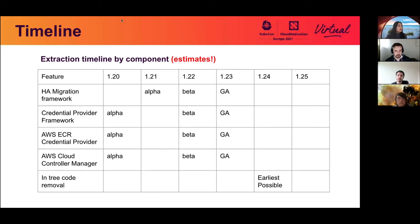What all this means is that the earliest possible date for the in-tree code removal, according to the AWS cloud provider timeline, is 1.24 — but that will probably be later just because of other dependencies.